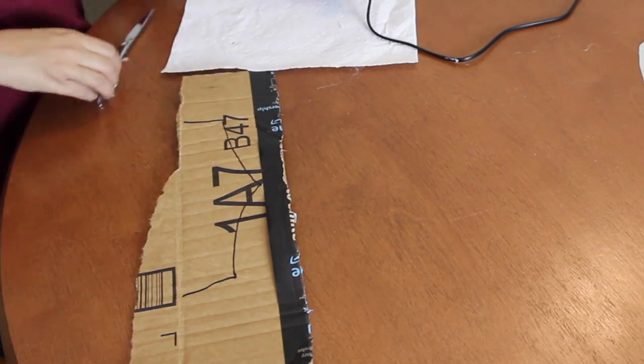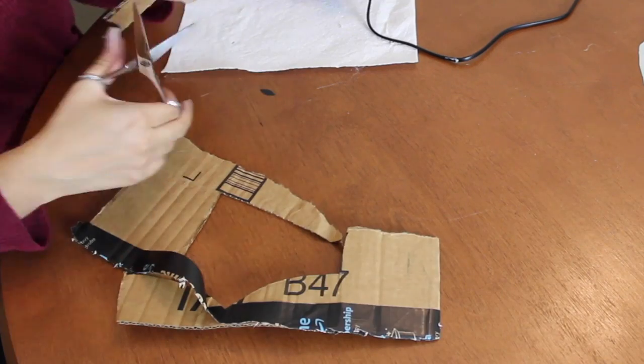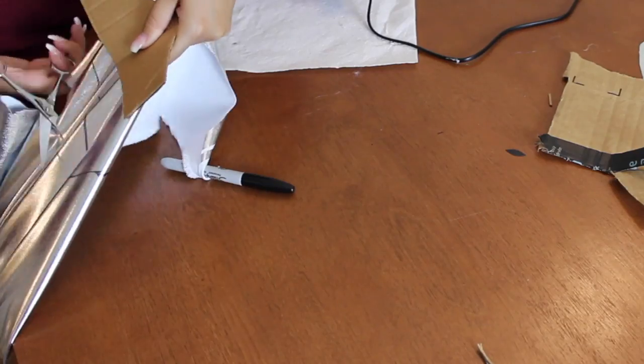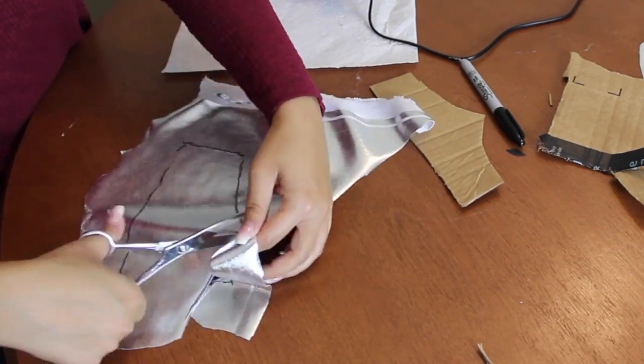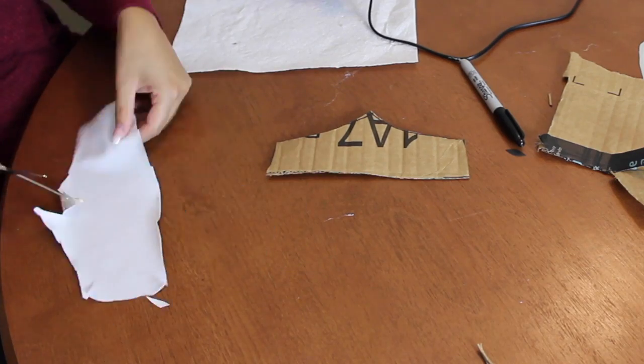Next up, it's time for the little crown that's a part of the alien antennas. I grabbed a piece of cardboard from an old box, drew the outline of the crown, and cut it out. Then I grabbed another piece of our metallic fabric, and traced the crown a bit larger. Cut it out, and add some cuts on the corners to help make smooth edges.